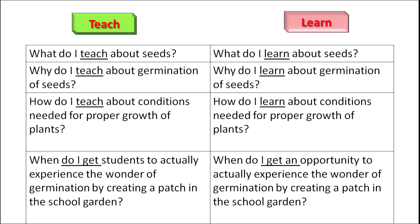The learner says: what do I learn about germination of seeds? Why do I learn about germination of seeds? How do I learn about conditions needed for proper growth of plants? The learner is now aware of what he is learning and why he is learning — the purpose of his learning is very clear to him. As teachers, we need to ensure that the learner knows why he is learning something. If we do not look at why he is learning something, then we are in trouble.